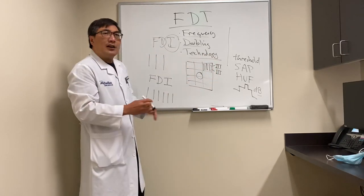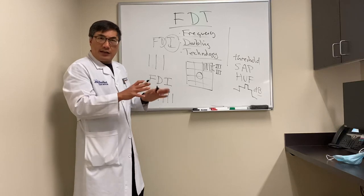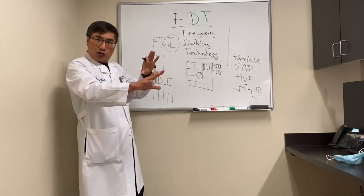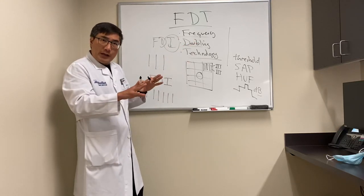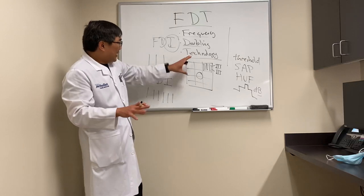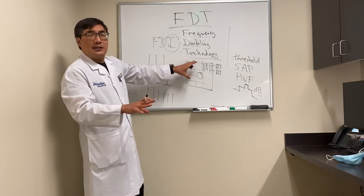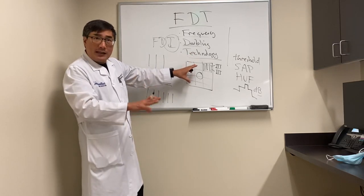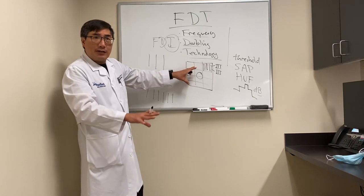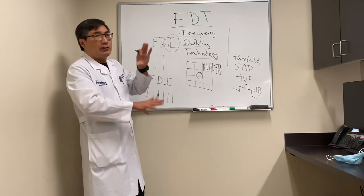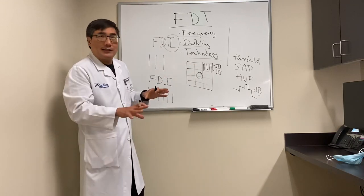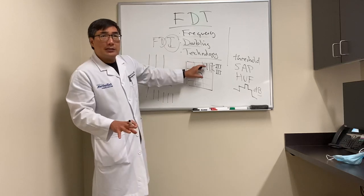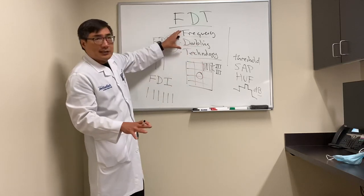FDT takes advantage of the intrinsic characteristics of different cells that interpret the information. It used to be thought that it was just the MY cell in the magnocellular layer; however, we know there's probably some processing in the cortex as well. It doesn't matter because the technology is the same.